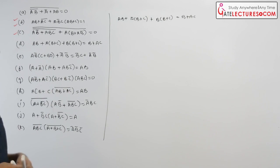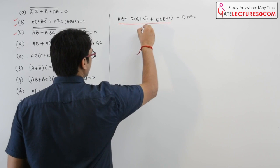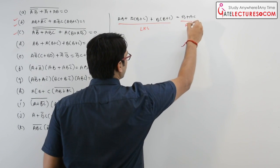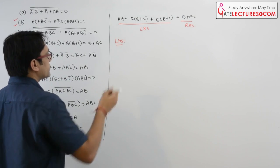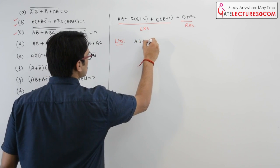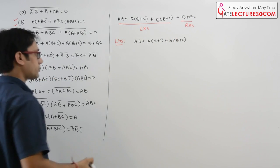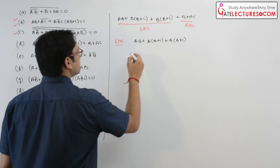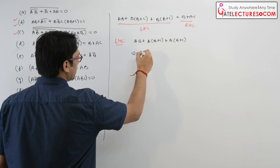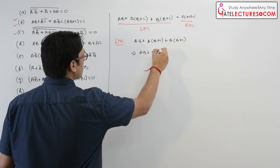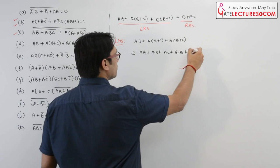As you can see from the question, this question is very easy. Let us take the left hand side first. LHS is: AB + A(B+C) + B·(B+C). Now you can open these brackets, so this can also be written as AB + AB + AC + B·B + B·C.